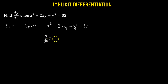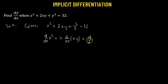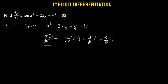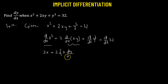We have the derivative of x squared, plus 2 being a constant, so we take 2 times the derivative with respect to x of x times y, plus the derivative with respect to x of y cubed. We can use the power rule for the first term to get 2x, plus 2 times. Using the product rule: x times the derivative of y with respect to x, plus y times the derivative of x with respect to x.